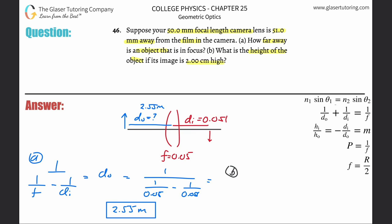Letter b: What is the height of the object if its image is two centimeters high? We can use our magnification formula. I'm going to use the left hand side of this equation: the image height divided by the object height equals negative the image distance divided by the object distance.